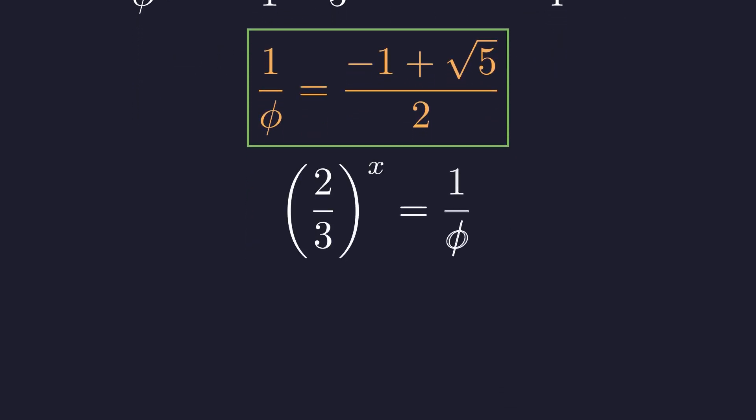So our problem was secretly asking, for what value of x does 2 over 3 to the power of x equal the reciprocal of the golden ratio? Astonishing.